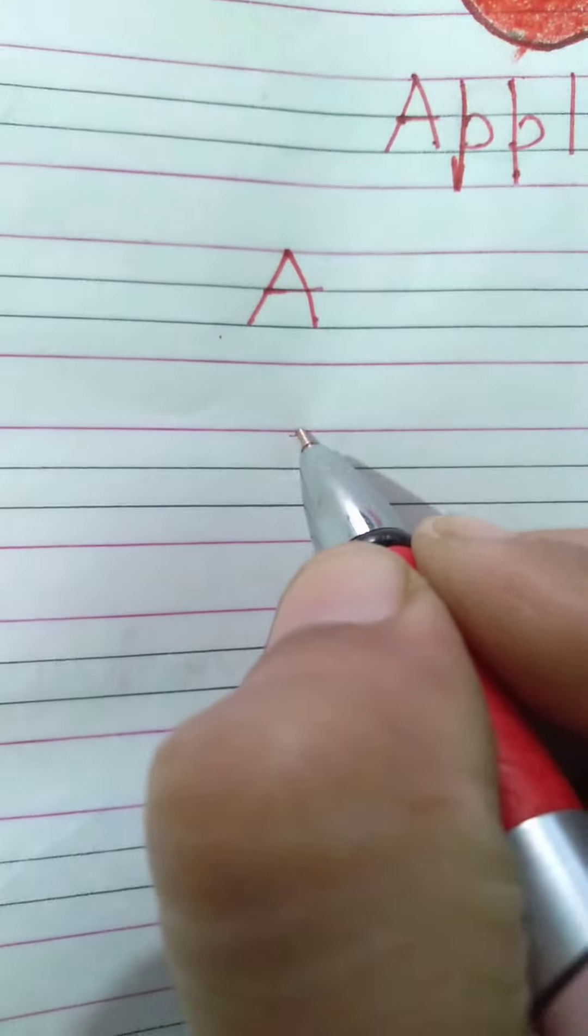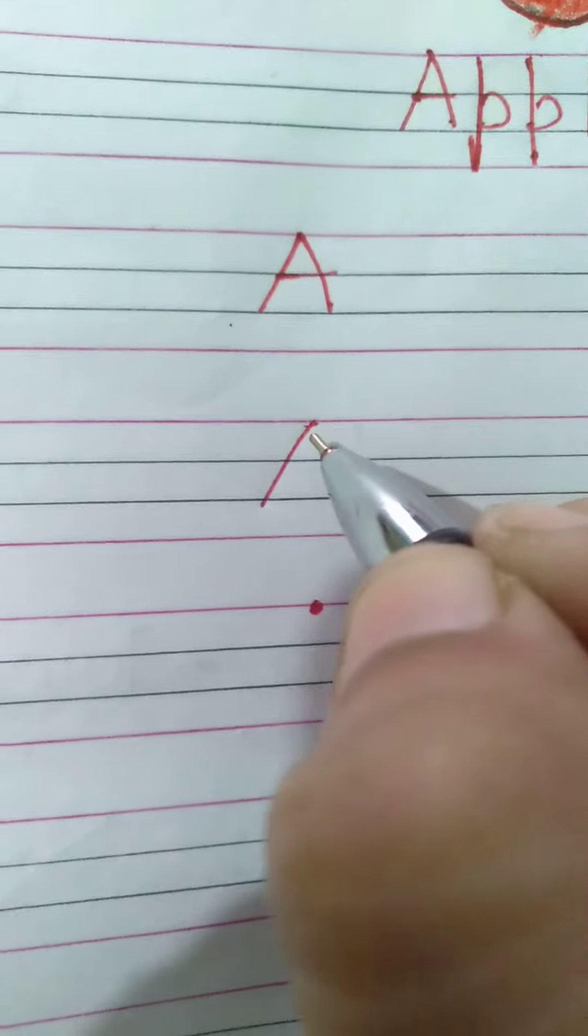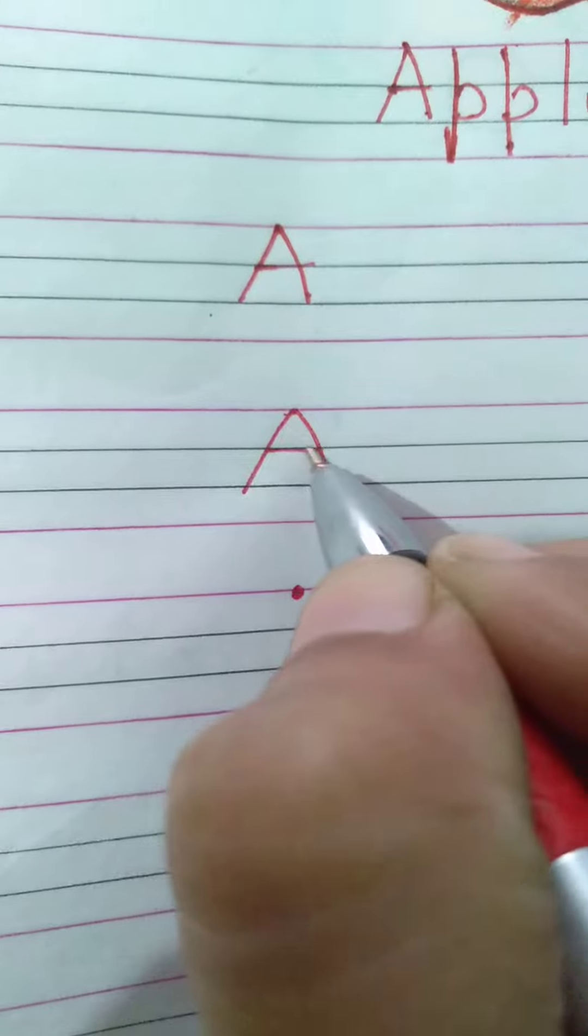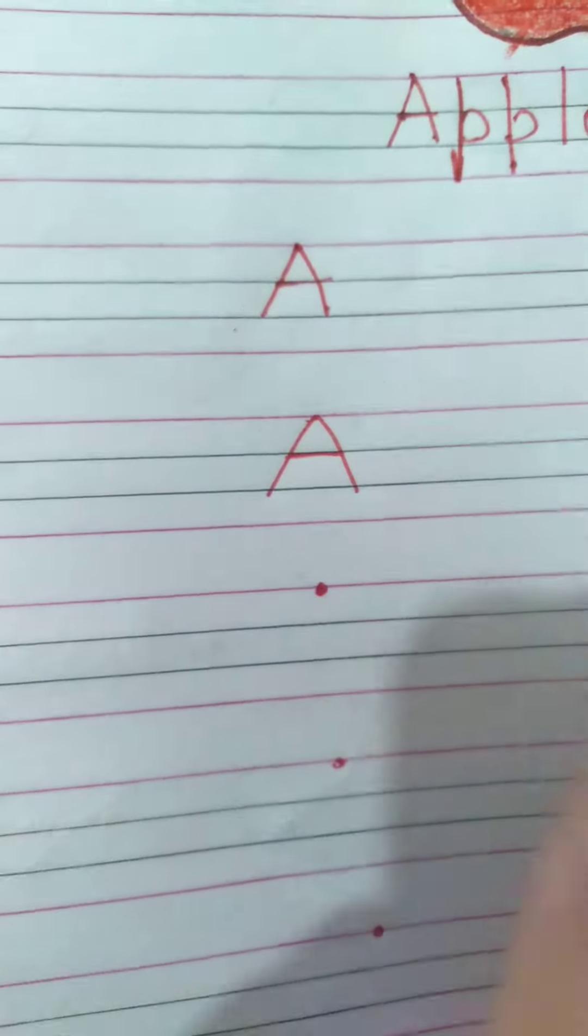It will make A. Again I'll show you how to write A: a backwards slanting line, a forward slanting line, a small sleeping line between these two lines. It will make A. Look carefully at the top of the line.